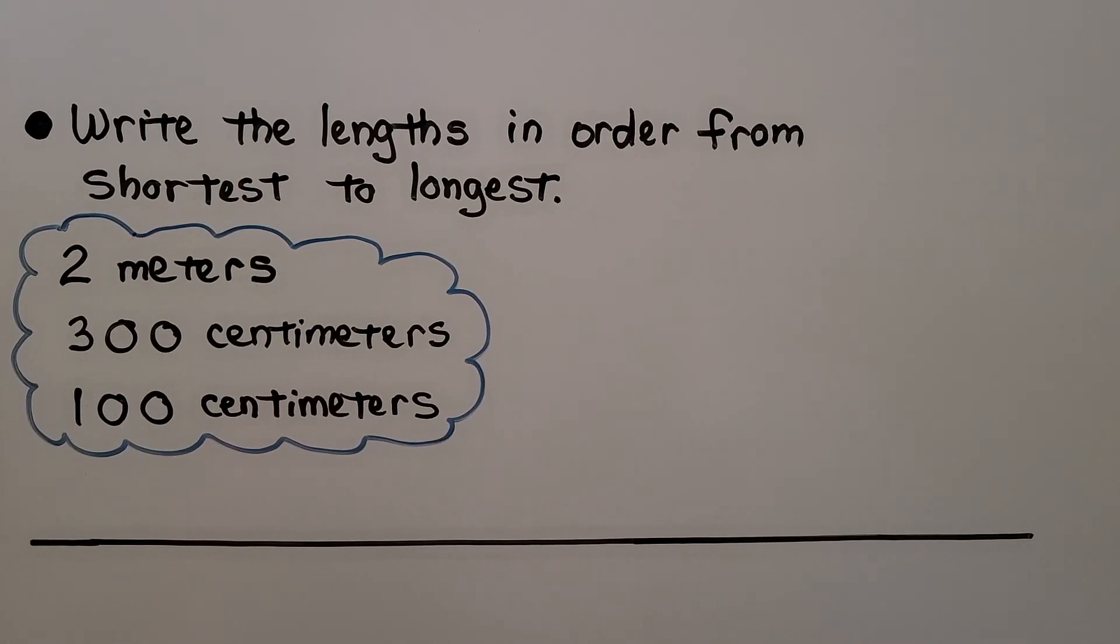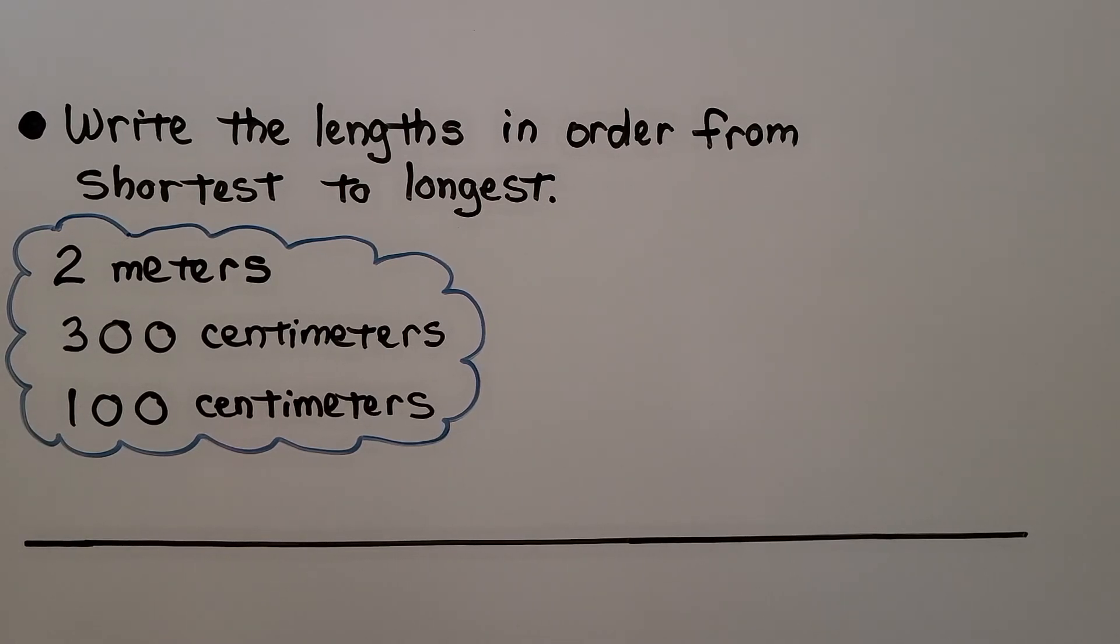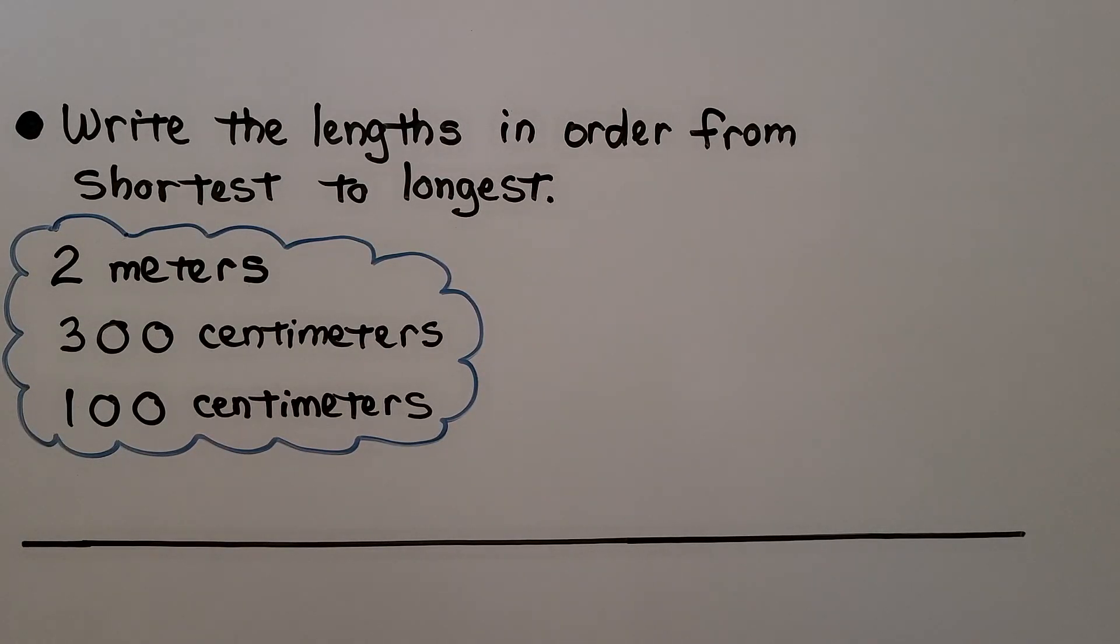Here it's telling us to write the lengths in order from shortest to longest. So shortest would be first, longest would be last. So out of these, which do you think is the shortest? Do you remember how long one meter is in centimeters? 100 centimeters is one meter. Here we have two meters. Here we have 300 centimeters. So 100 centimeters would be the shortest.